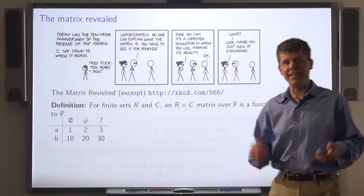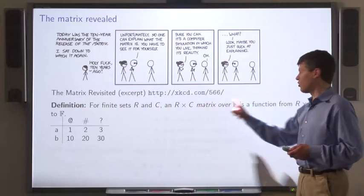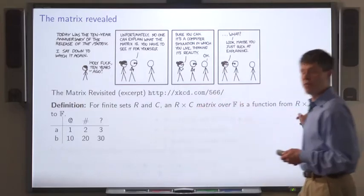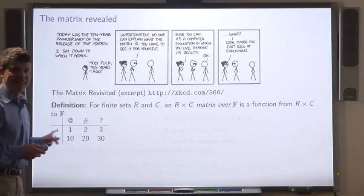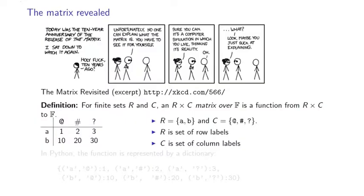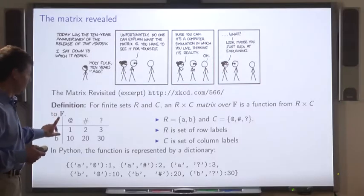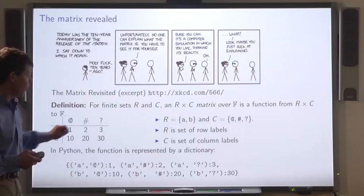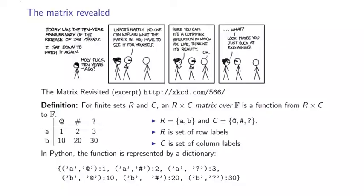I'm going to take a slightly different approach to matrices. For finite sets R and C, an R by C matrix over a field F is a function from the Cartesian product of R by C to the field F. So here's an example. A and B are row labels, and at, sharp, and question mark are column labels. And in Python, we'd represent this function as a dictionary mapping from the Cartesian product, the set of pairs, one element from R and one from C, to the field.